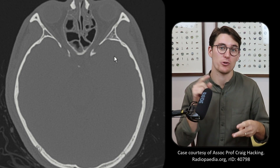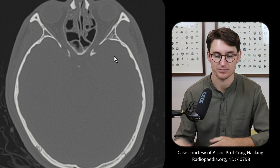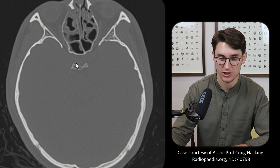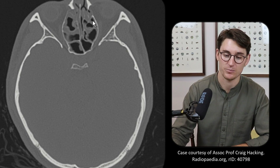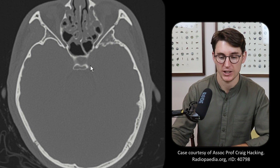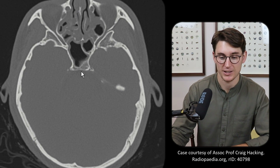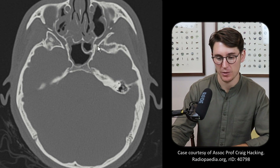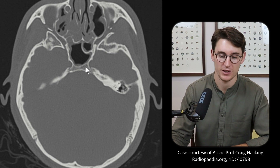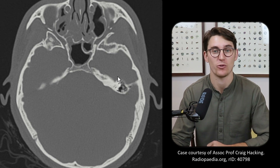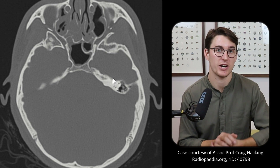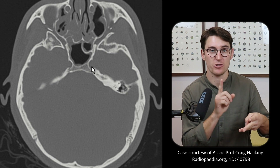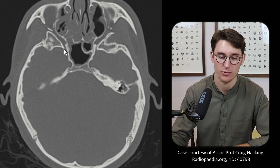Scrolling slightly inferiorly, we can see our sella turcica and ethmoidal sinuses, then the sphenoidal sinus. As we continue down, another foramen forms on either side of the sphenoid sinus — this is the foramen rotundum, carrying our second division of the trigeminal nerve, the maxillary division. So the first division goes through the superior orbital fissure, and the second division goes through the foramen rotundum.